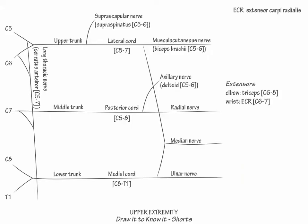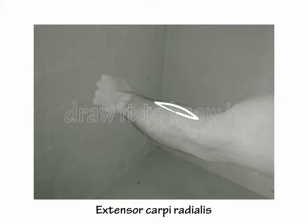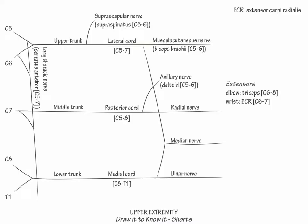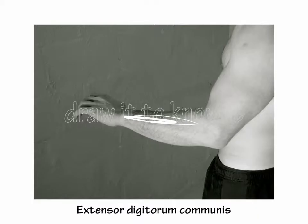which extends the wrist with lateral deviation, and extensor digitorum communis C7 to C8, which extends the third and fourth digits.